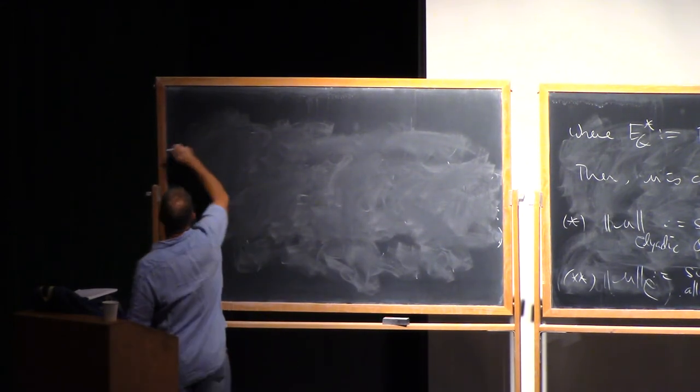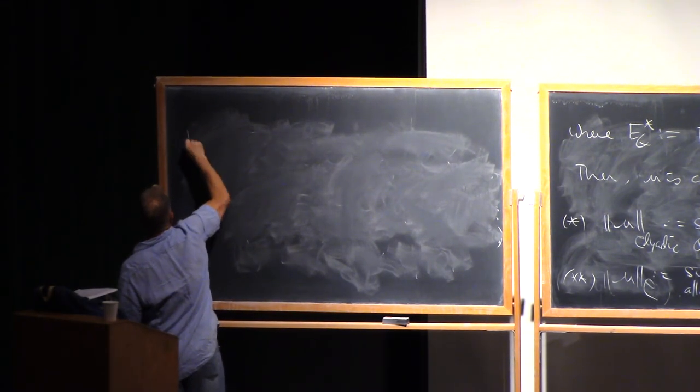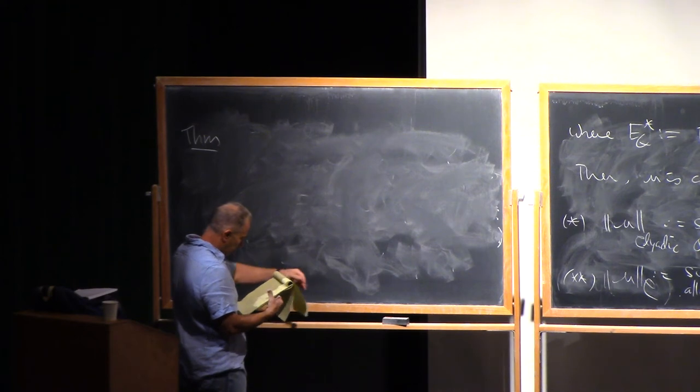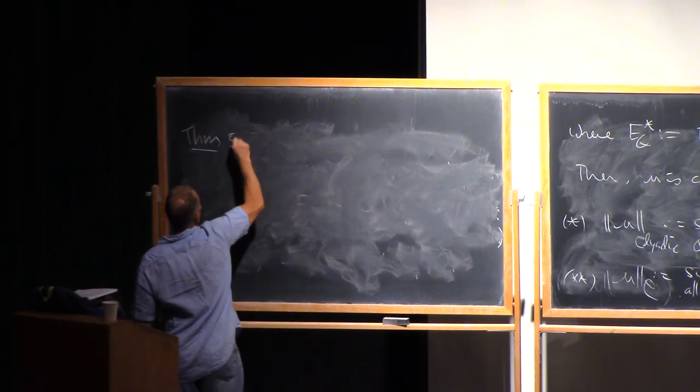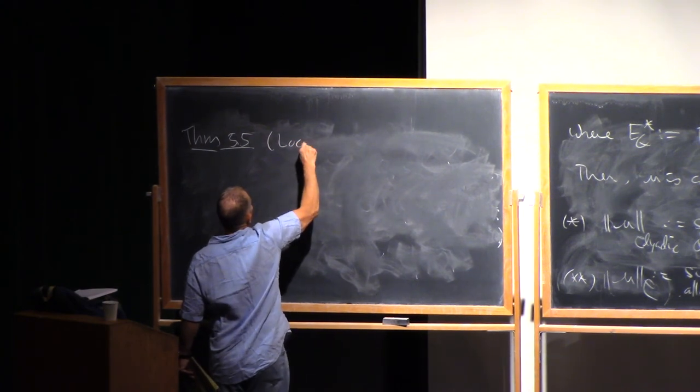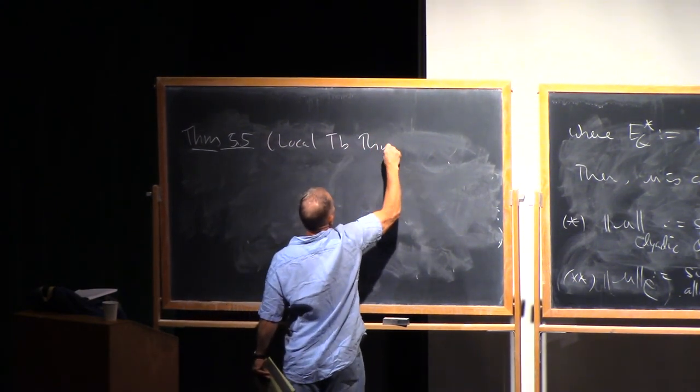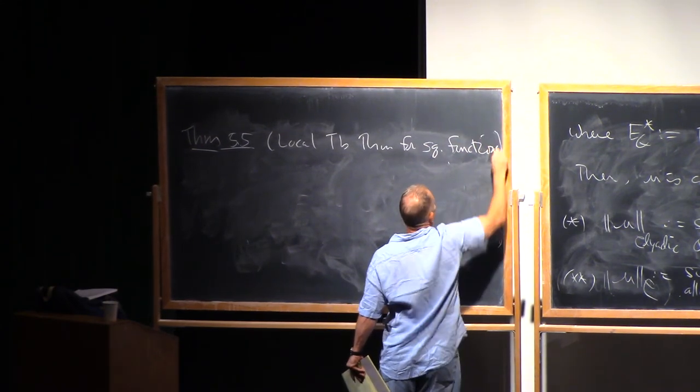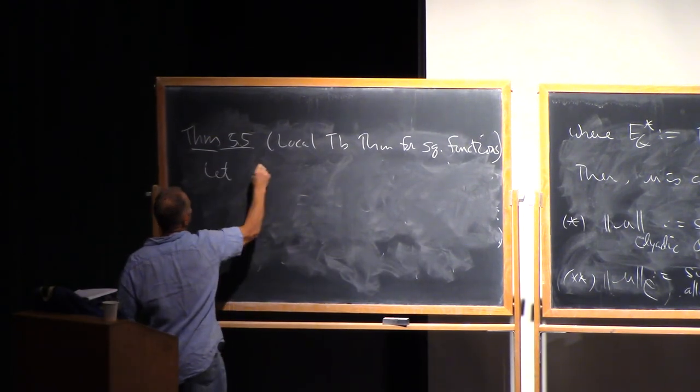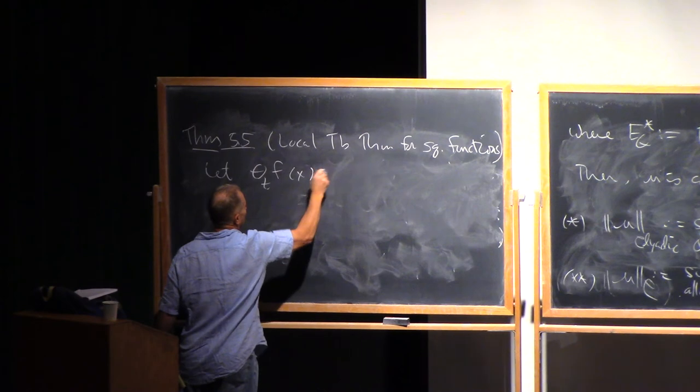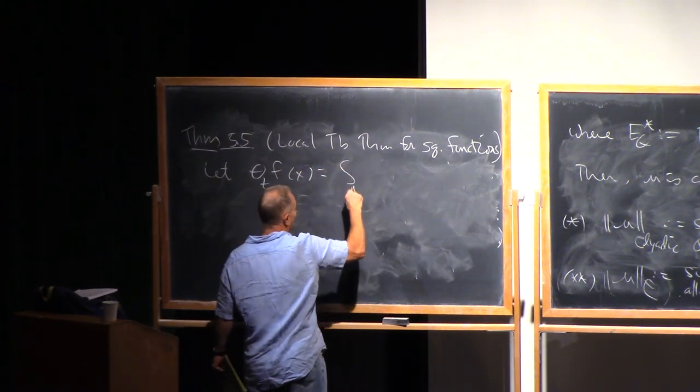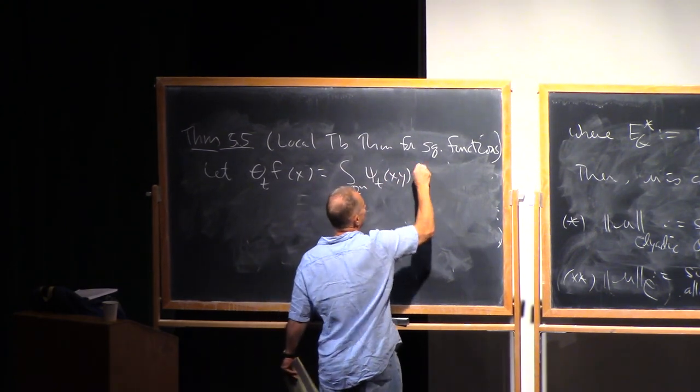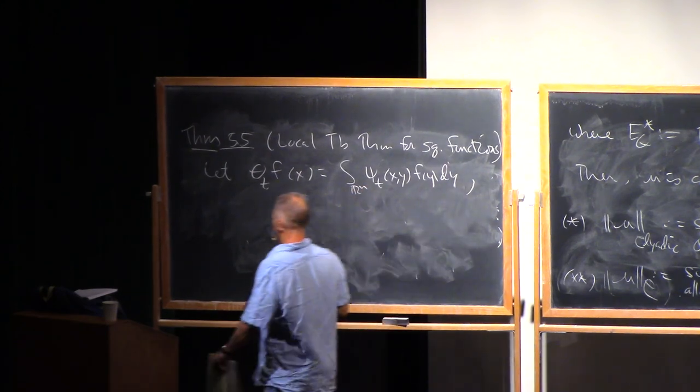So now let's state the T of B theorem, the local T of B theorem. Theorem 5.5. So as usual, we're going to let theta T of f be defined by an integral in R^n of some kernel psi T of x, y, f of y, dy, and psi T of...